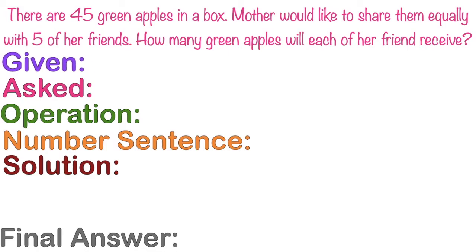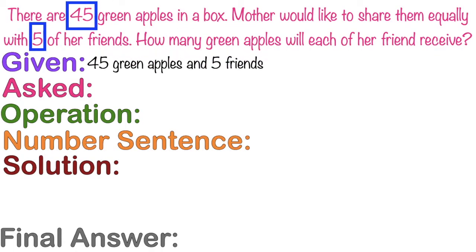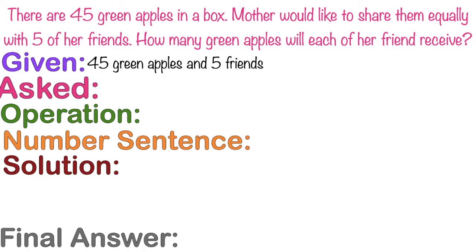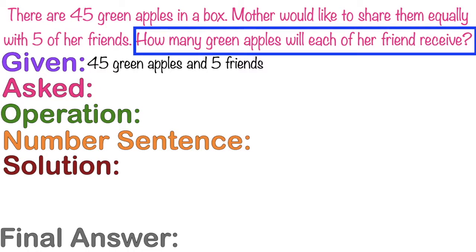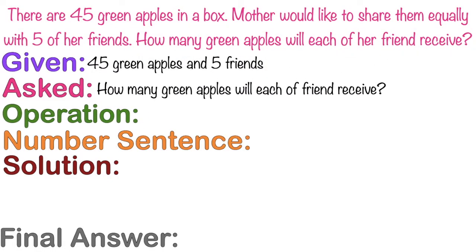Let's start with the given. What are the given numbers? The given are 45 and 5. So we have 45 green apples and 5 friends. What is the problem asking? How many green apples will each of her friends get?